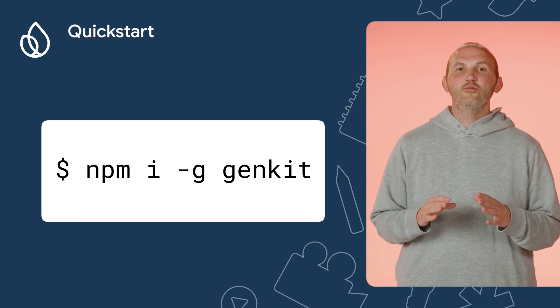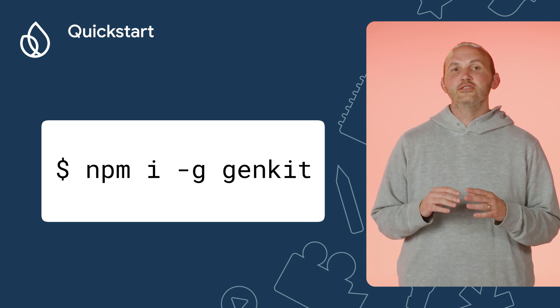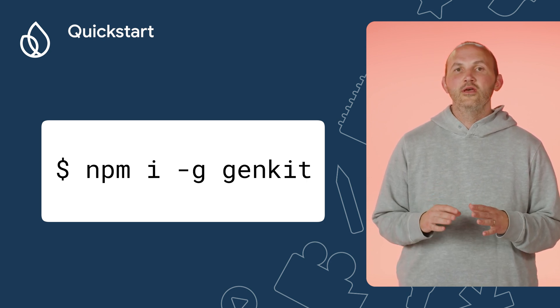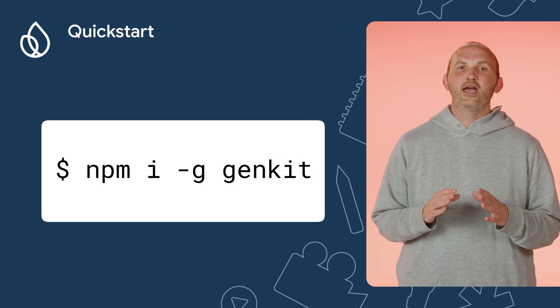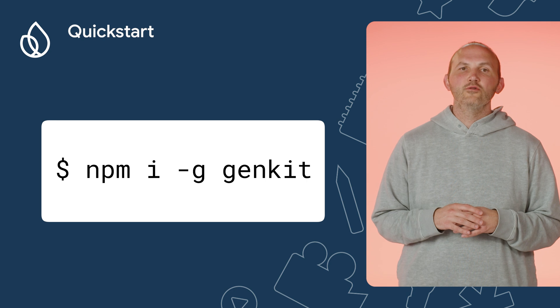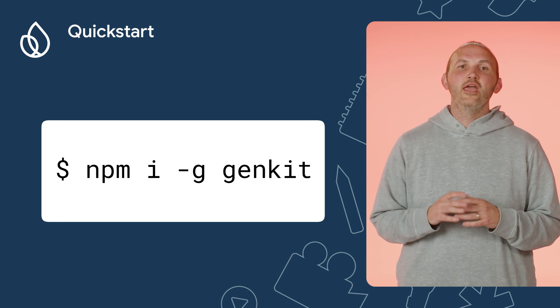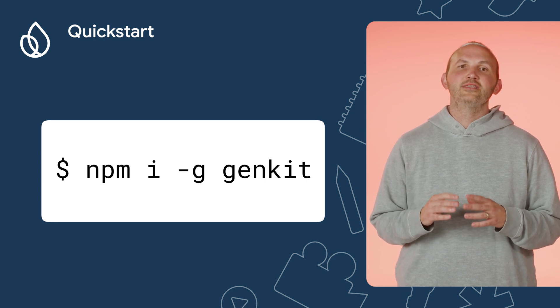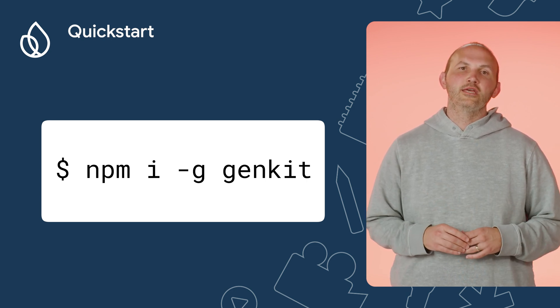Let's hop into some code and build a really basic flow. To get started with Genkit for Go, first install the Genkit CLI using Node.js. You can also use npx to execute the package without having to install it. The Genkit CLI also includes the Genkit DevUI, a graphical user interface that makes it easy to build, develop, test, and inspect the AI features you build with Genkit.